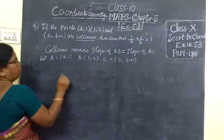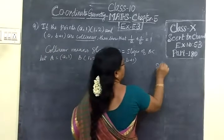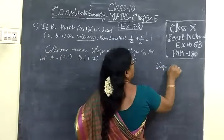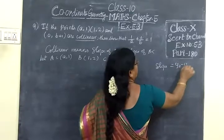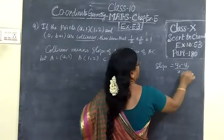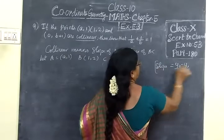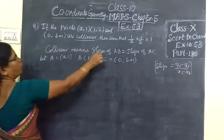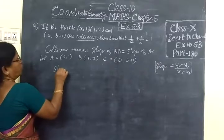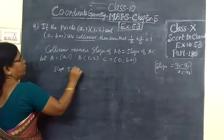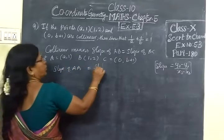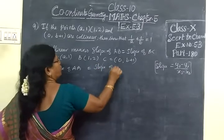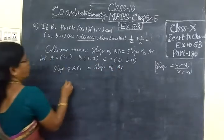By this condition, we know that slope formula: slope equals Y2 minus Y1 by X2 minus X1. So using this formula, we are first writing slope of AB equal to slope of BC.